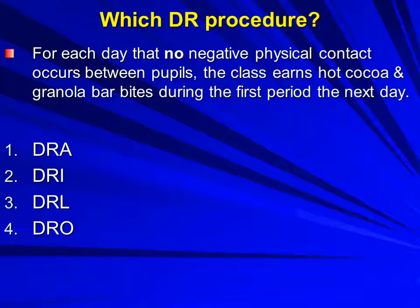For each day that no physical contact occurs between pupils — we've got a group version here, the whole class working on anger management — if we get no negative physical contact between our young learners, they're going to get granola bar bites and cocoa for the first period of the next day. No exhibits of the behavior, zero rates being displayed. Yes, we're looking at D-R-O.